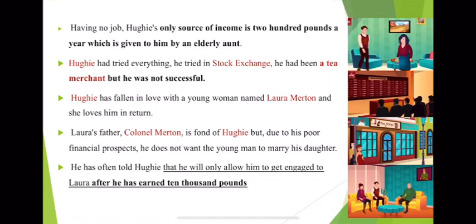Hughie had tried everything. He tried the stock exchange but could not do well — he was like a butterfly among the bulls and bears. He had been a tea merchant for a while but tired of the different varieties. He tried selling dry sherry, and in that too he was unsuccessful. Ultimately, he became a delightful, ineffectual young man with a perfect profile and no profession — no job and no source of income.